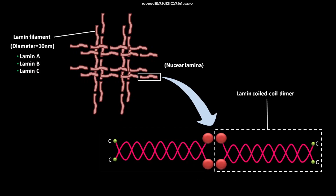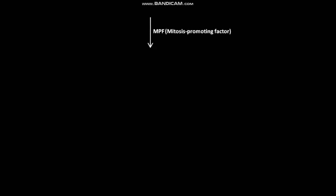A lamin has a globular N-terminal domain and a C-terminal domain. A lamin tetramer, in the presence of MPF or mitosis-promoting factor, undergoes phosphorylation of specific serine residues near the end of the rod-like central section of the lamin dimers.